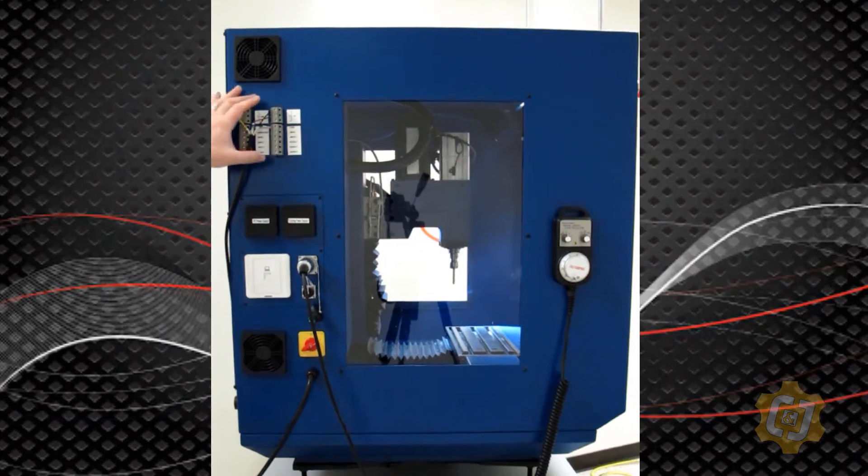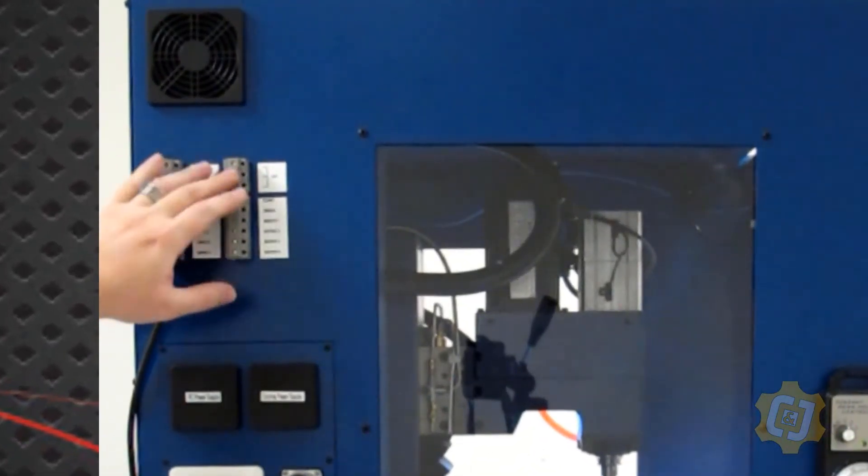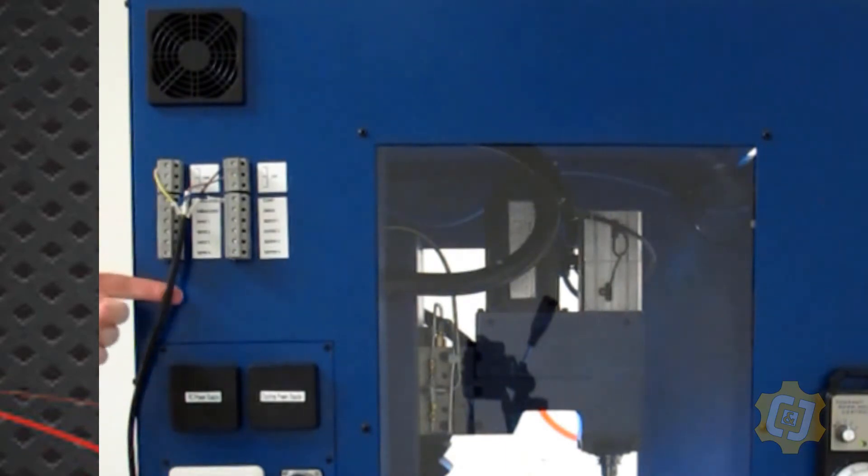Up here at the top you can see that I have a set of terminal blocks for my 24 volt accessories. The only one that I actually had to plug in was my pneumatic vise. Everything else really is already done.